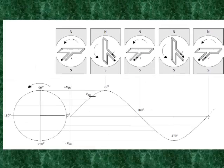After an additional 90 degrees, it is at its original position and has made one full revolution, also producing no voltage. If this coil is spun in this fashion quickly, this sine wave will be produced.